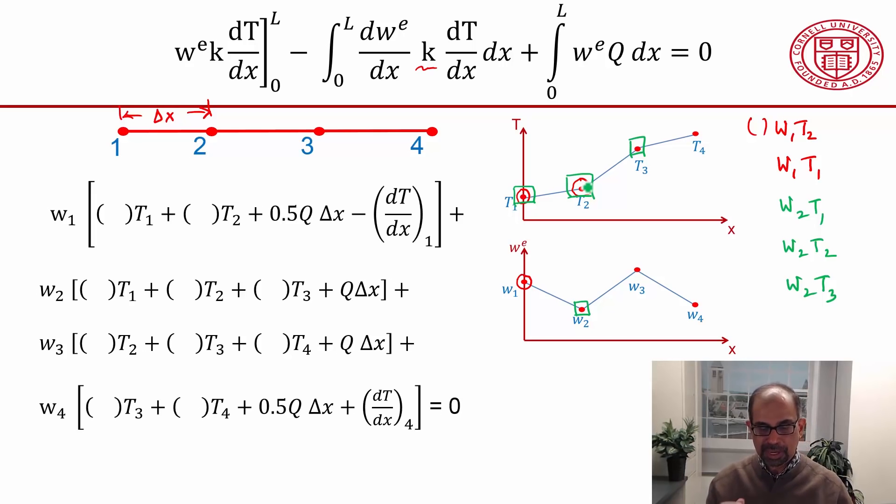You get all these terms, put them all together, and organize them in a particular way. I've done that here. Let's look at the first row. If you take all the terms that are multiplying w1 and you organize them like this, this is what you'll get. w1 will multiply t1 with some constant coefficient, and multiply t2.